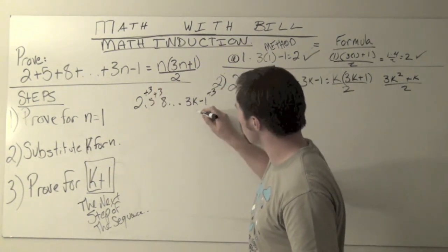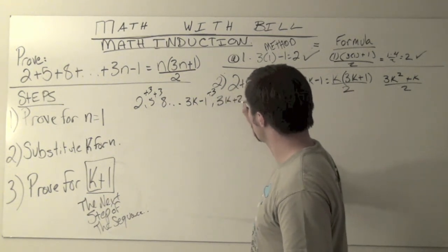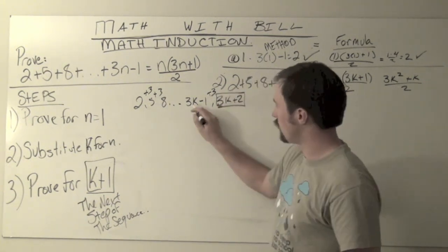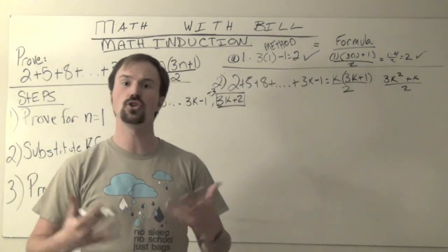3k minus 1, our next step of plus 3 would bring us to 3k plus 2. And if you took 3k minus 1 and added 3, you get this 3k plus 2 term.